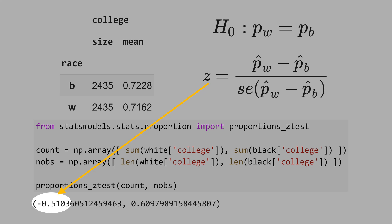This is not even one standard deviation, and the p-value is 0.6. Therefore, we cannot reject the null hypothesis.